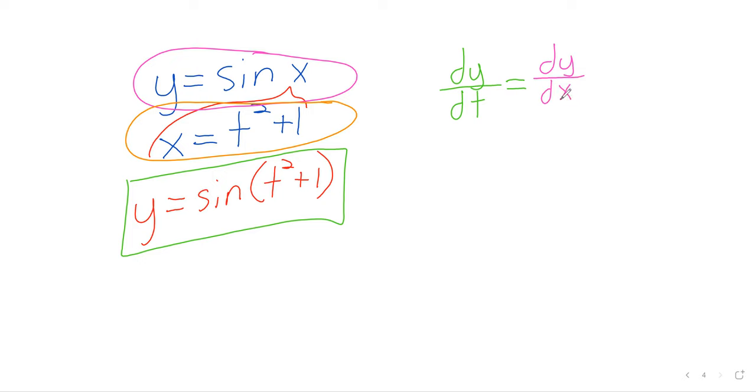And the chain rule says, okay, you take the derivative of the sine. Notice our variables here are y and x, hence dy/dx. And then you take the derivative of t squared plus one. Our variables here are x and t. So when you take the derivative, it will be dx/dt. And you multiply those derivatives together. And that gives you the derivative of y with respect to t.